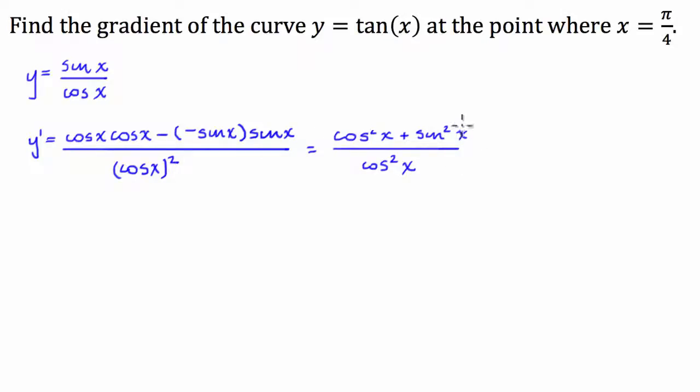Now using the Pythagorean identity, which is, for your benefit, the Pythagorean identity is cos squared of x plus sine squared of x equals 1.